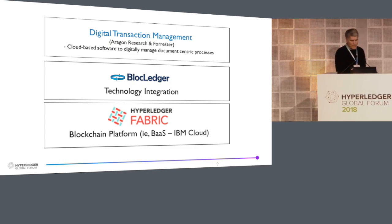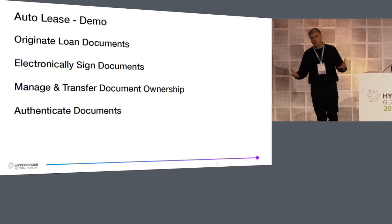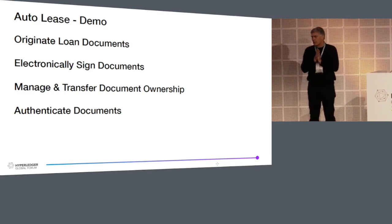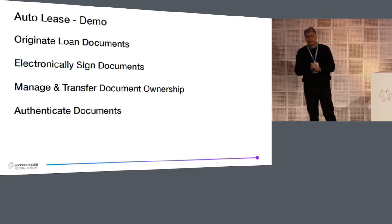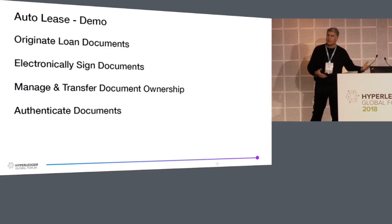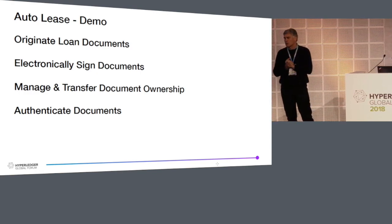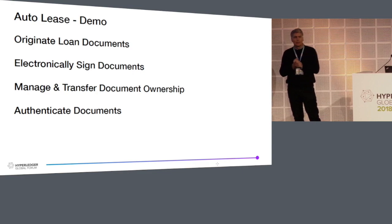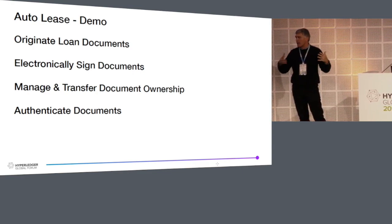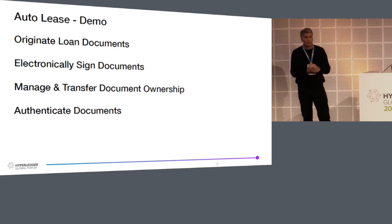We will get into the demonstration of an auto lease. We have deployed a Fabric blockchain sitting out on an IBM Cloud. What we'll do is originate loan documents and sign those documents — the signing will be done by both Eric as the lessee and me as the lessor. Once we sign those documents, we'll manage and track the ownership of them and show the various capabilities around authenticating back to the originals with the blockchain.